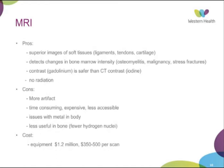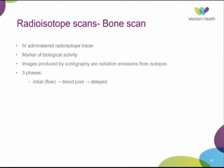The pros of MRI: it's the superior modality for imaging soft tissues — ligaments, tendons, cartilage. It detects changes in bone marrow intensity, making it useful for osteomyelitis, malignancy, and stress fractures. The contrast used, gadolinium, is much safer than iodine contrast used in CT, as many people have iodine allergies. And there's no radiation involved. The cons: more artefact, the patient must sit very still for about an hour, which is an issue for claustrophobic patients or young children. It's time-consuming, expensive, and less accessible. There are issues with metalware — absolute contraindications for some implants. It's less useful for bone viewing due to fewer hydrogen protons in bone. Equipment costs about $1.2 million, and a scan costs $350 to $500 depending on the region of the body.